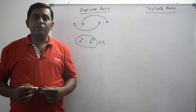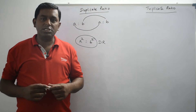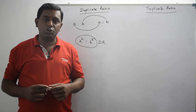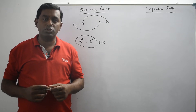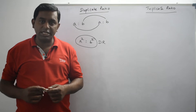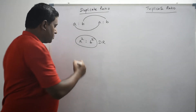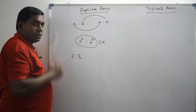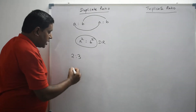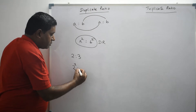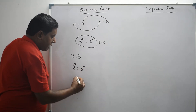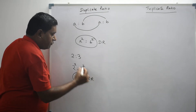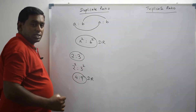From this, we can understand a fact: if your ratio is given and you want to get the duplicate ratio, what you have to do is square both the first term and second term. Let's look at an example. Let's consider the ratio 2 is to 3. I want to get the duplicate ratio of 2 is to 3. I have to square both the first term and second term — I get 4 is to 9. So, 4 is to 9 is the duplicate ratio of 2 is to 3.